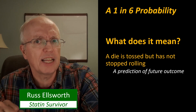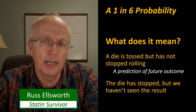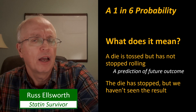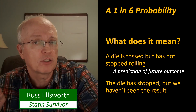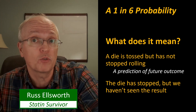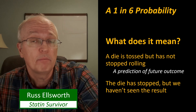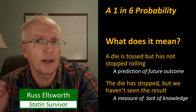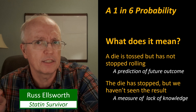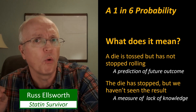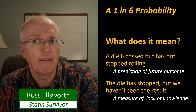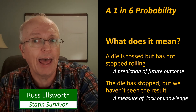Now, suppose the die has stopped, and I throw my hand over it and don't let you see it — and I didn't see it because I was honest and looked away. We ask, what is the probability that it's a 4? We still say it's 1 in 6 because we can't see it. But in fact, that's not a prediction of a future outcome anymore, because there's a 100% chance that it is what it is, and a 0% chance that it is what it ain't. We just don't know what it is. So the 1 in 6 probability is actually a measure of our lack of knowledge.